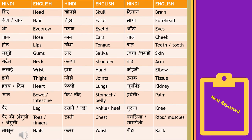'Hatheli' means palm. 'Pair' means leg. 'Takne' ya 'adi' is ankle and heel. 'Adiyaan' is heels — that is the plural. 'Gutna' means knee. 'Pair ki ungli' means toes, and if you just say 'ungli' it refers to fingers of the hand.